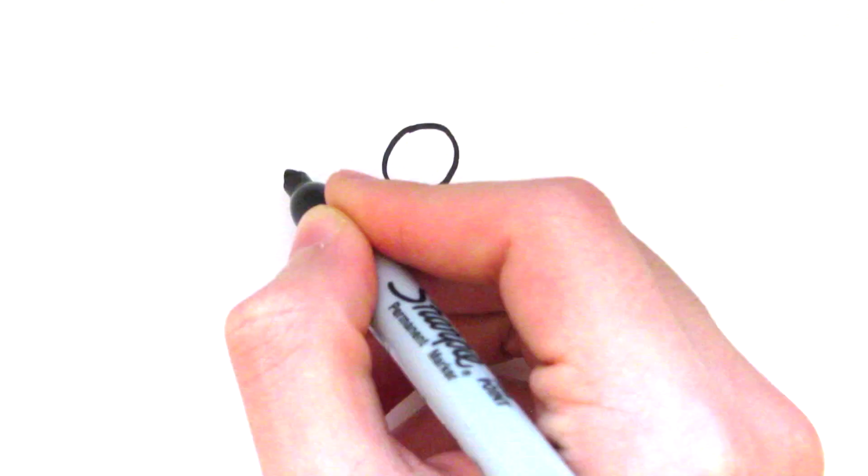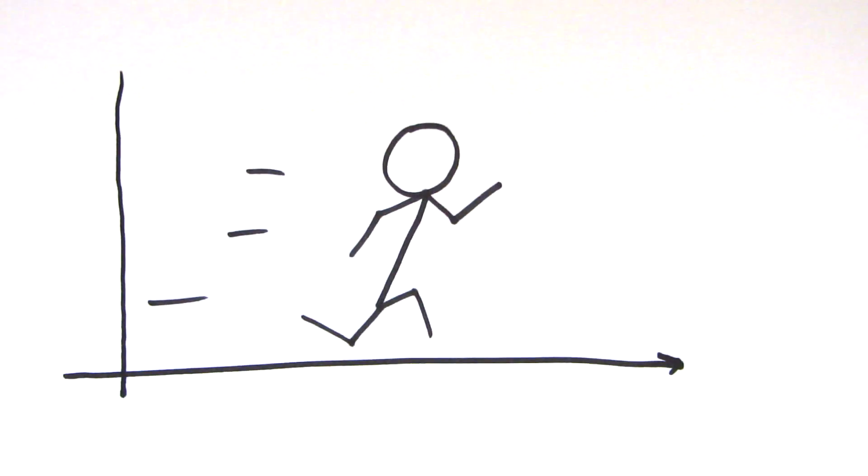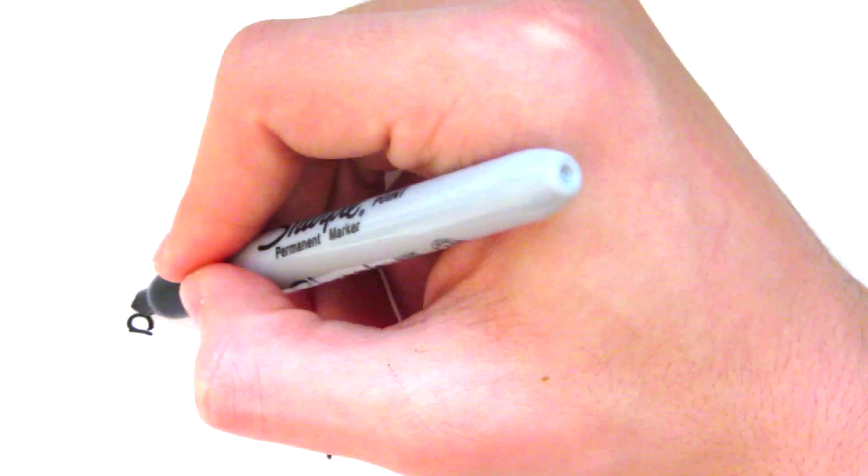When we're talking about motion, it can be very useful to draw a graph. If you're moving in a straight line, a graph that's useful is a distance-time graph.